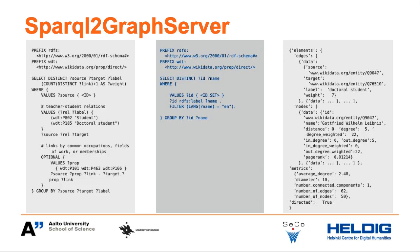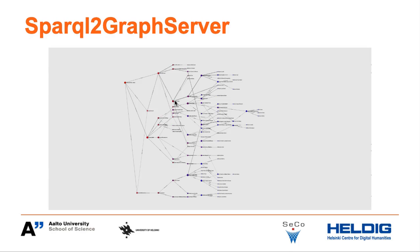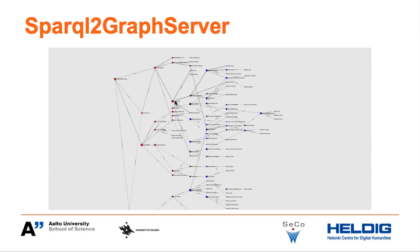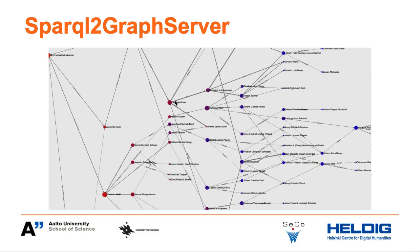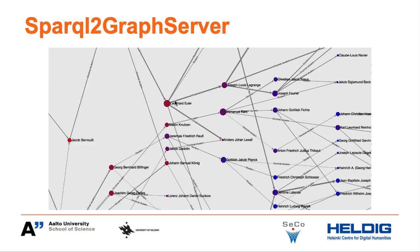The server response in JSON format is depicted on the right. This example shows the results for a query of the relations between famous mathematicians and the Wikidata database.